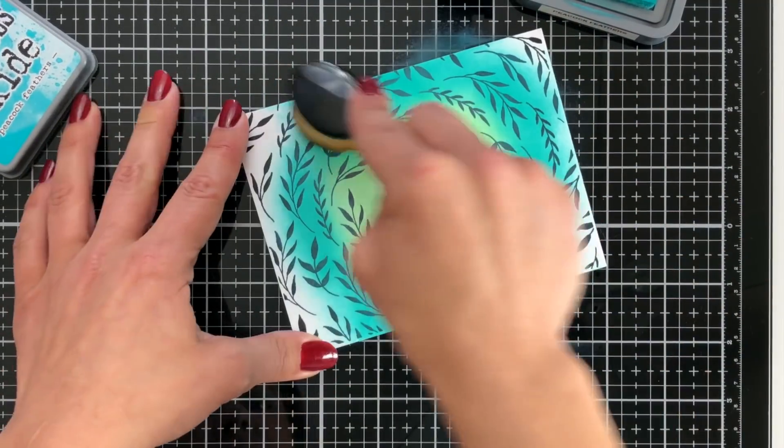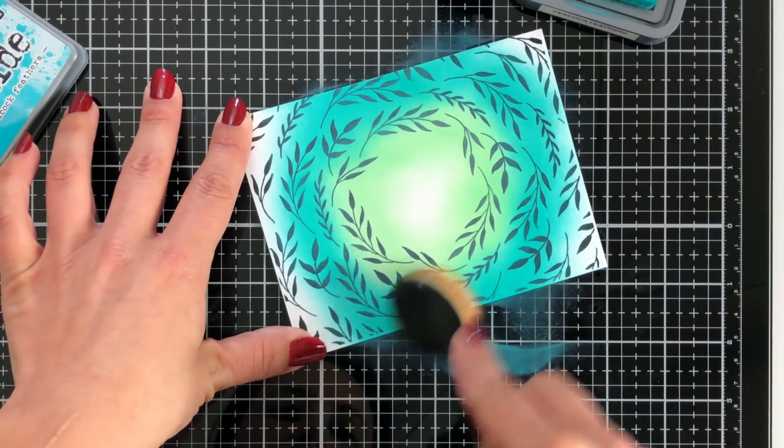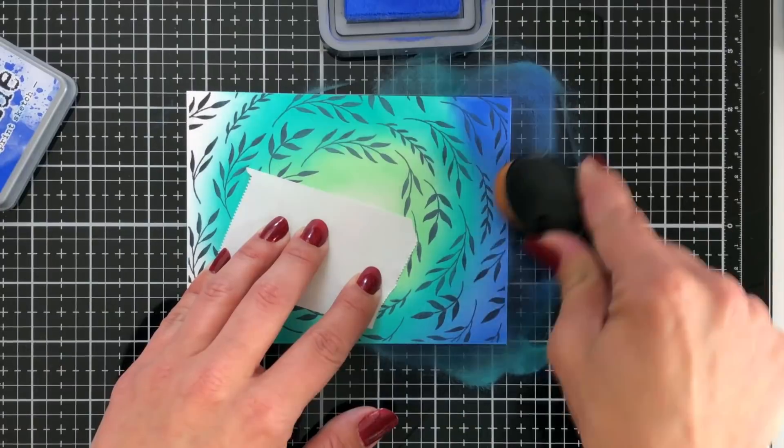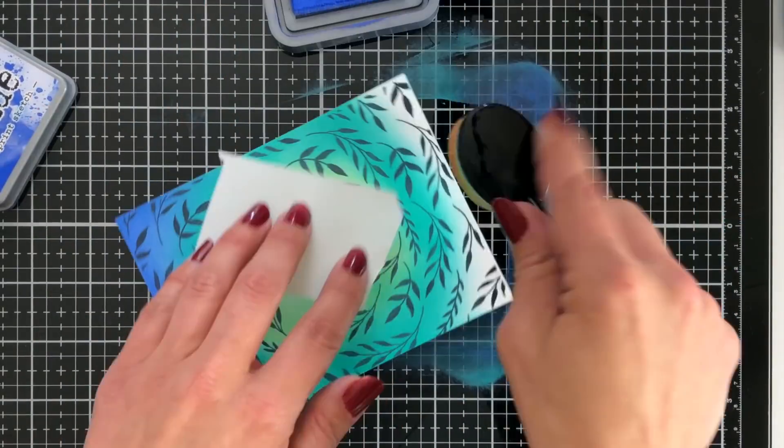Once I have a nice blend between the cracked pistachio and the peacock feathers I'm going to come in with blueprint sketch and I'm going to use that right on the outer edges of my card panel.